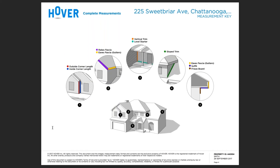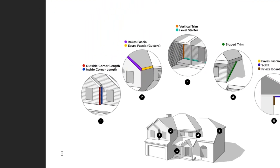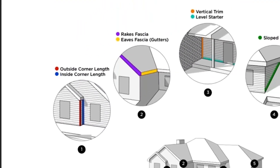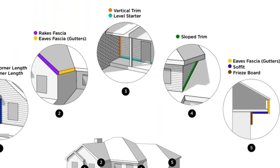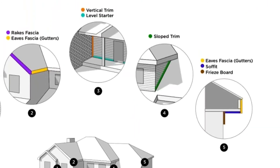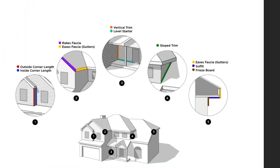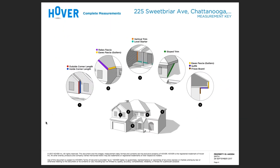The measurement key page will provide you insight on where we're actually extracting our data points from. Please use this as a resource when looking at the summary pages to understand where we're gathering the information. Alternatively, you could also refer to the 3D rendering to click on the individual line segments and understand where these measurements are coming from as well.